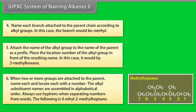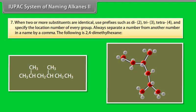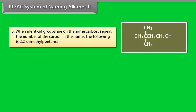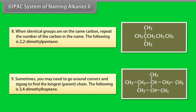Number 7, when two or more substituents are identical, use prefixes such as di for 2, tri for 3, tetra for 4, and specify the location of every group. Always separate a number from another number in a name by a comma. The following is 2,4-dimethylhexane. Number 8, when identical groups are on the same carbon, repeat the number of the carbon in the name. The following is 2,2-dimethylheptane. Number 9, sometimes you may need to go around corners and zigzag to find the longest parent chain. The following is 3,4-dimethylheptane.